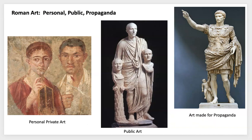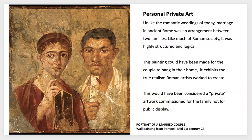One thing to consider is the various types of Roman art that were made: personal private artwork, public art, and art made for propaganda — to convince people to believe in a leader or pay taxes to support the Roman military. From your readings and research you can learn more about these different artworks, and you can also see the realism in the painting.